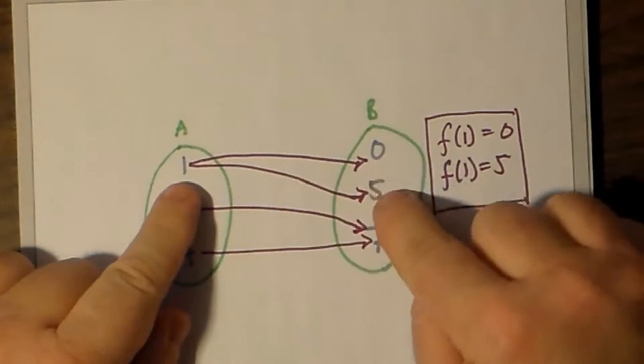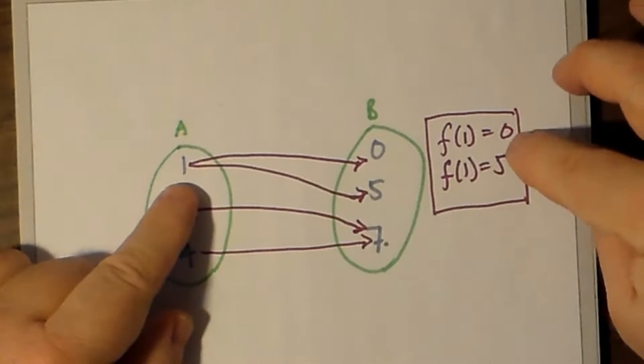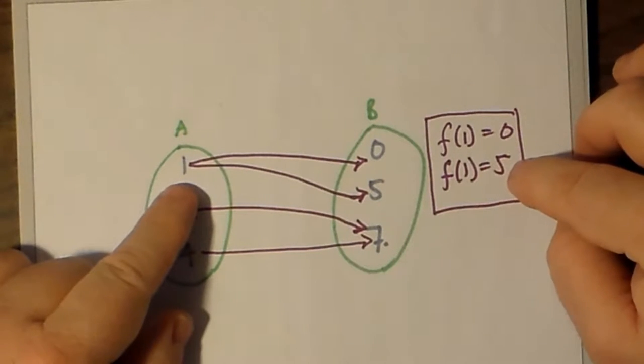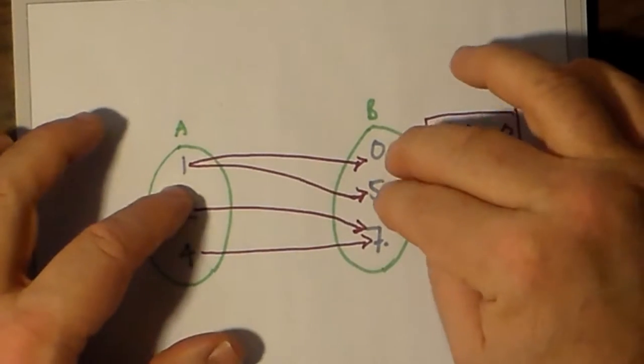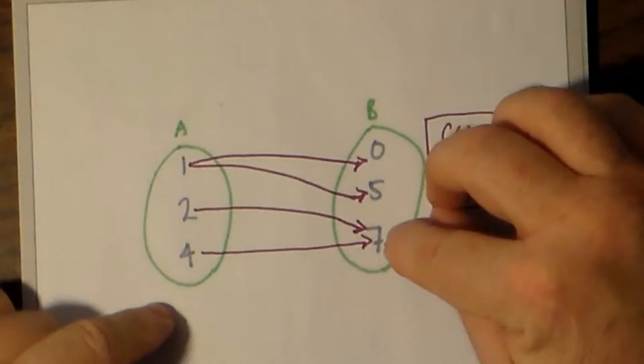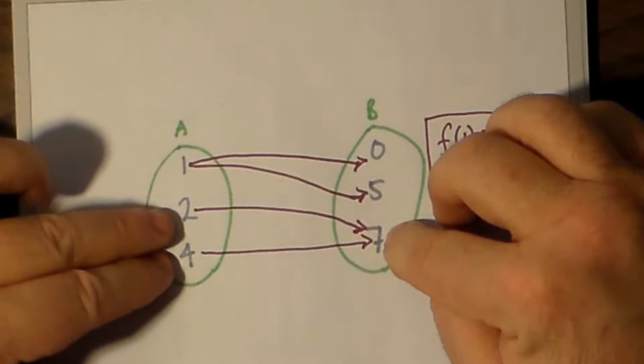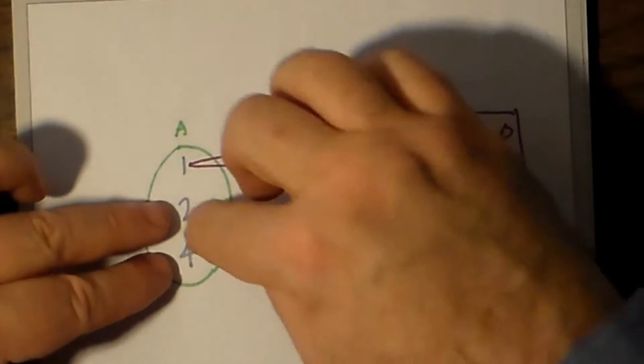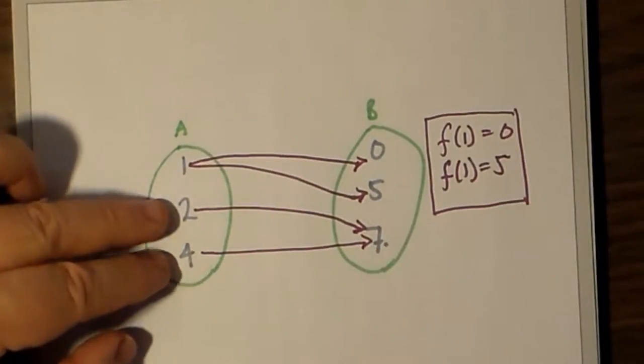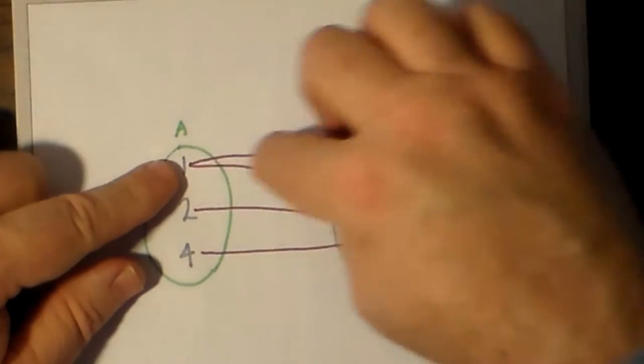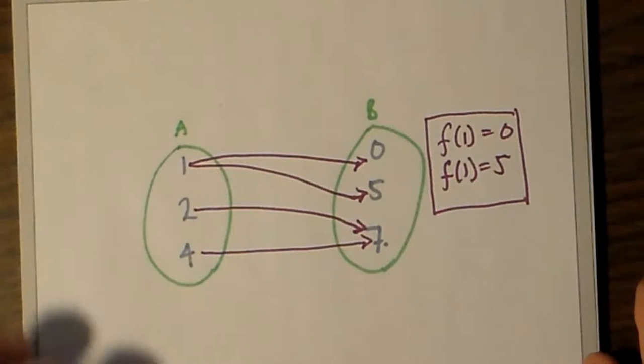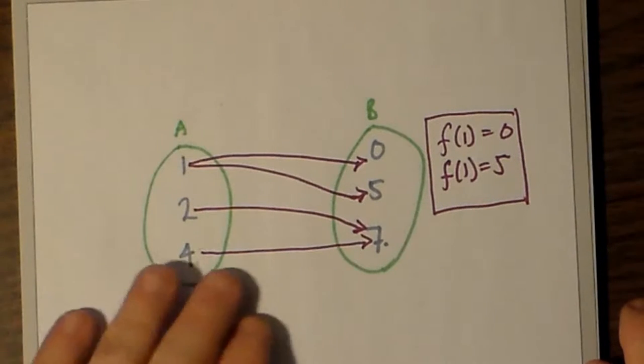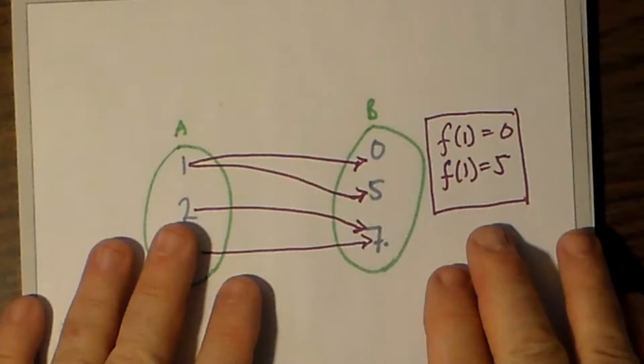We don't run into situations where f will require us to map the same element of A into more than one element of B. This produces a strange ambiguity in our mapping. Notice here that an element called 1 is mapped onto both 0 and 5, as if to say f of 1 is 0 and f of 1 is 5, which is not allowed for a function.